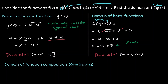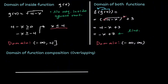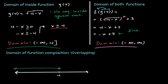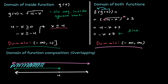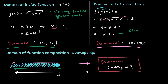Now let's see where both domains overlap. Drawing a number line, the domain of the inside function goes from negative infinity to 4, including 4 — closed circle. The domain of the composition is all real numbers. Looking at the overlap from left to right, both domains intersect everywhere until we reach 4. So the domain of the composition is from negative infinity to positive 4, including 4. We look at the overlapping domain and we are done.